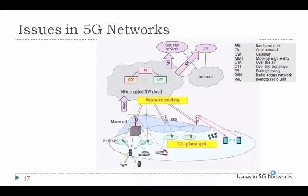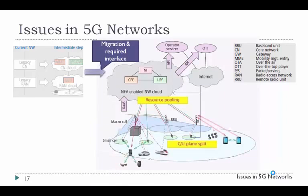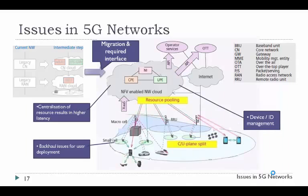Several issues need to be addressed to realize the proposed network architecture. One important issue is how older networks will interface with the new architecture; an intermediate migration step for older core and radio access networks to the cloud could be envisioned. Centralization of resources could lead to performance bottlenecks, higher latency, and single points of failure, requiring additional robust measures to avoid devastating impact on service availability. Backhaul will also be an important issue, especially for user deployment, where local breakout may be required for efficient routing. New paradigms of identity management and charging need to be developed to cope with the huge variety and number of connected devices.